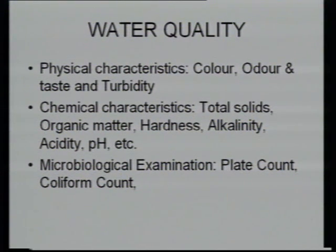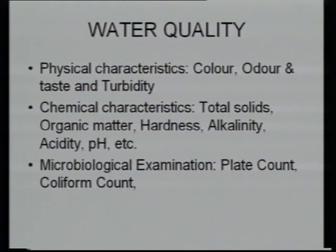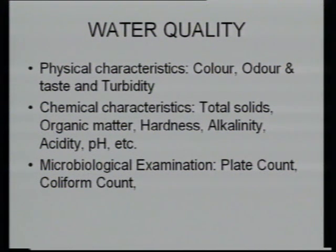Microbiological quality should also be tested. Physical characteristics — check the colour, odour, taste, and turbidity. For chemical characteristics, check total solids, organic matter, alkalinity, and pH. For microbiological examination, do a plate count. When setting up a new factory or location, you must check the water quality in that area, because it will have an important impact on your product.